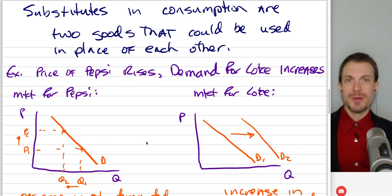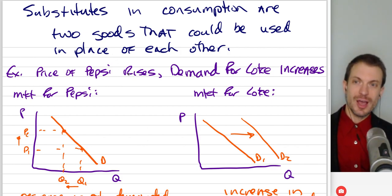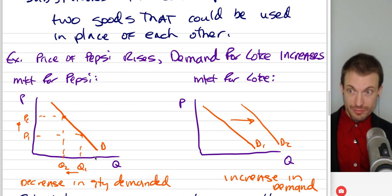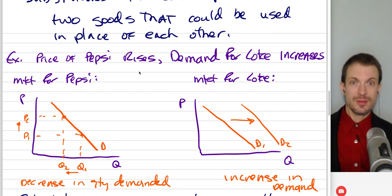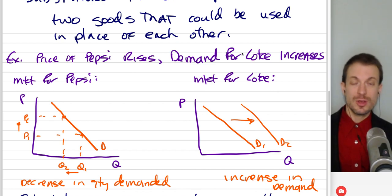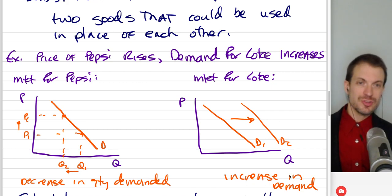Substitutes in consumption are two goods that can be used in place of each other — for example, Coke and Pepsi. Suppose the price of Pepsi rises. From the perspective of Pepsi, that's a change in price, so we can only get a change in quantity demanded — a decrease. From the perspective of Coke, this is an increase in the price of a substitute, so the demand for Coke is going to increase. In the market for Coke, we'll get a rightward shift of demand.